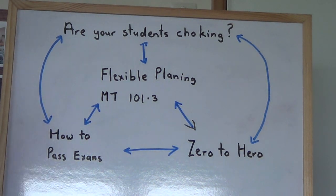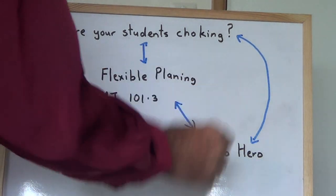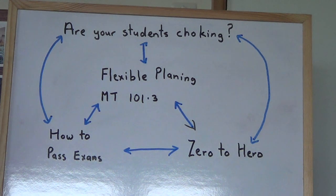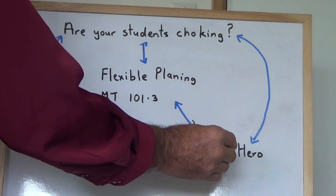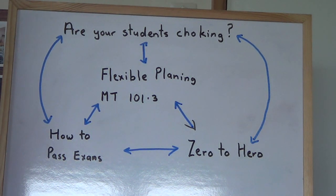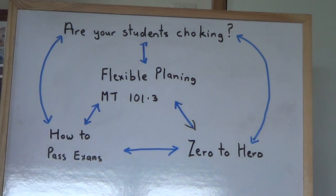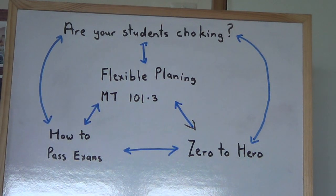It's the second string — there are two classes, a top class and a lower class, and I've got the lower class. They're doing an exam and I'm doing the flexible planning with them, but there's more to it. There'll be a video on how to pass exams — we'll give you the whole nine yards with study techniques and everything. I'm telling you how to get students through exams and the techniques you can use. This happened about my ninth year of teaching, and I taught about 40 years, so I learned a few things after that. So have a look at this: flexible planning, are your students choking, how to pass exams, and Zero to Hero — remember them, you need to look at them. They're all together, they're all connected.